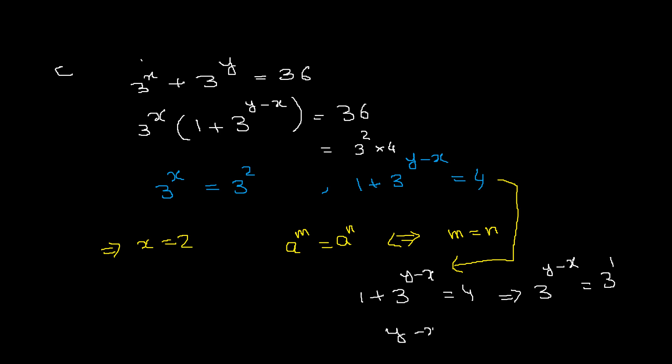So what do we have now? We have x equals to 2 and y minus x equals to 1. So if we plug x equals to 2 in the second equation we get y minus 2 equals to 1. So y equals to 1 plus 2 which equals to 3. So we get y equals to 3.